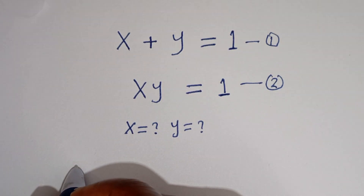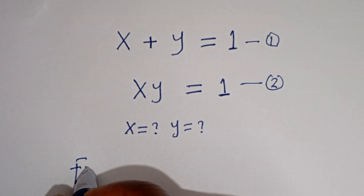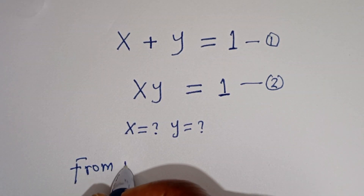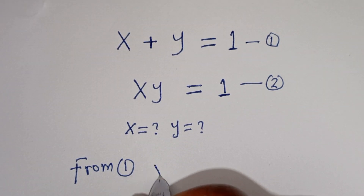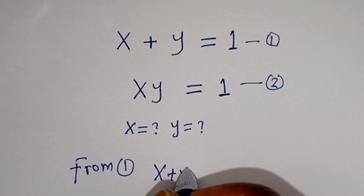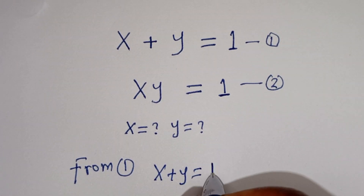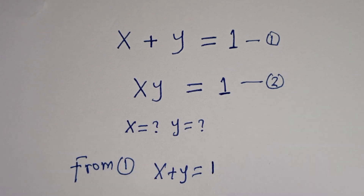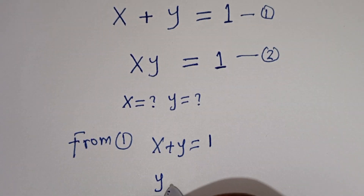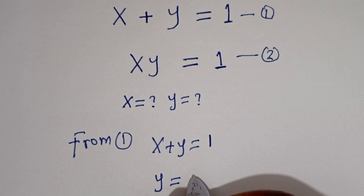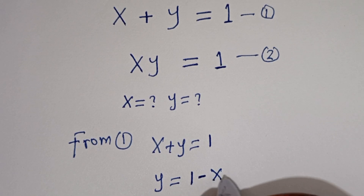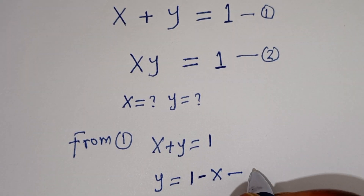From equation 1, we have x plus y is equal to 1. Then y is equal to 1 minus x. Let's call this equation 3.